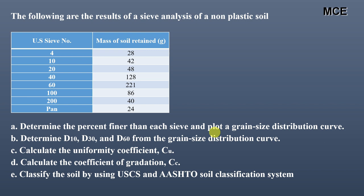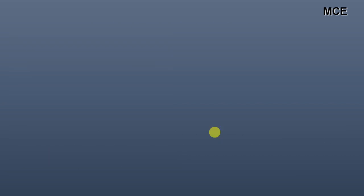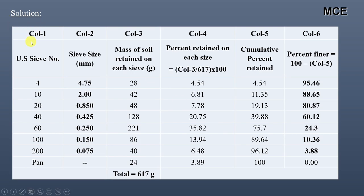Let us first draw a table for the grain size distribution. The table has six columns. The first column is for the US sieve number, the second column is the sieve size corresponding to each sieve number — sieve number 4 has a size of 4.75 mm, sieve number 10 is 2 mm, sieve number 20 is 0.85 mm, and so on. The third column shows the mass of soil retained on each sieve, as given in the question. The total mass of soil retained on all sieves is 617 grams.